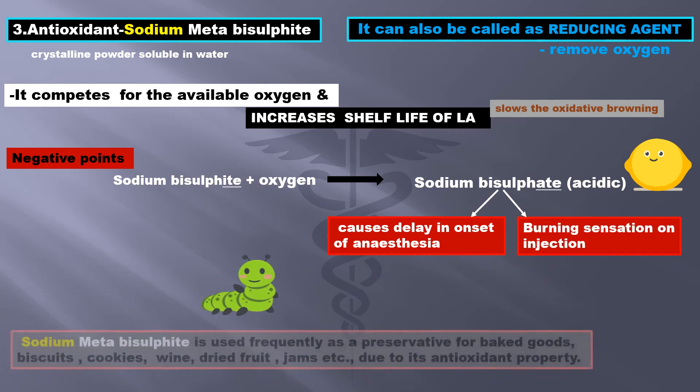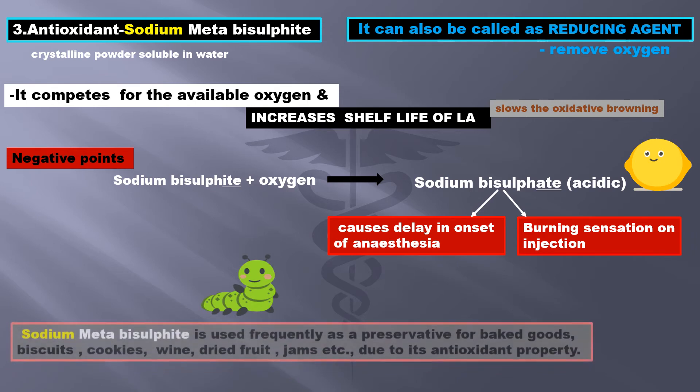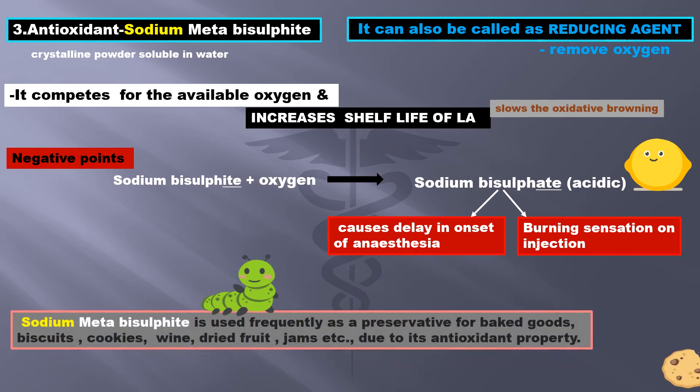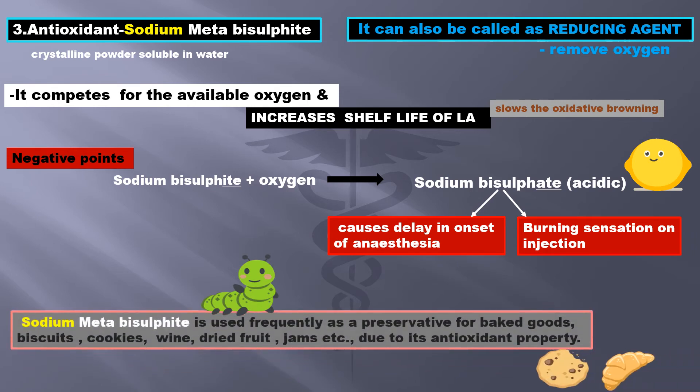Interestingly, sodium metabisulfite is frequently used as a preservative for baked goods, biscuits, cookies, jams, etc., due to its antioxidant property.